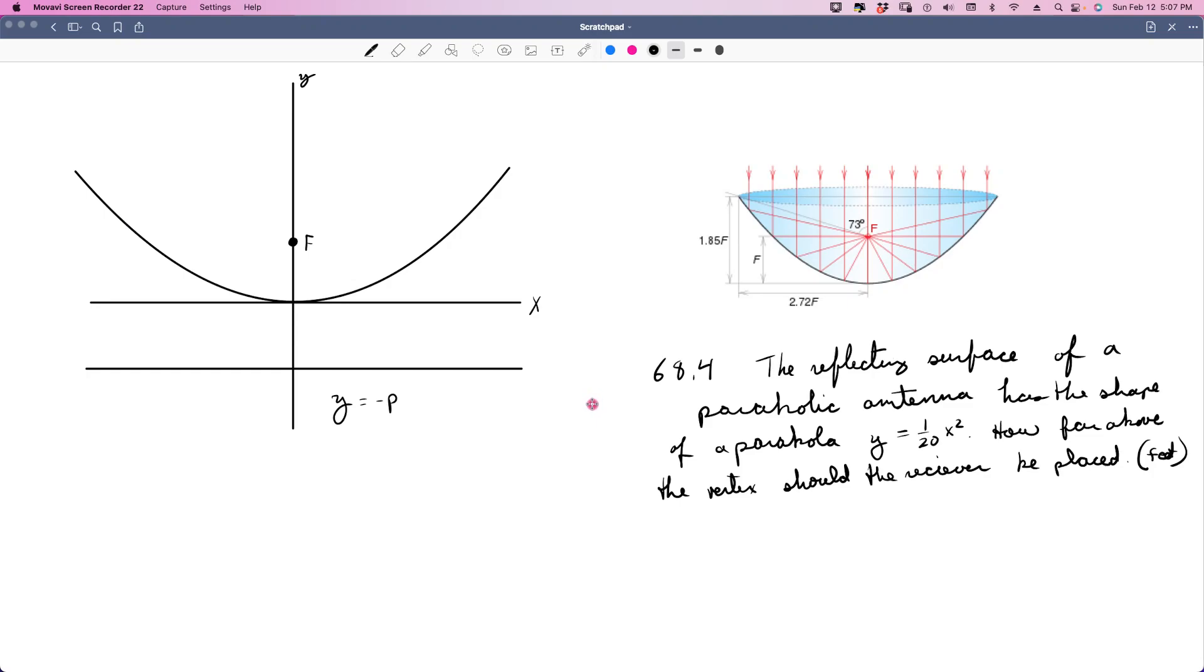The locus form of an equation of a parabola whose vertex is at the origin, whose axis is vertical, is shown right here. If P is positive, the focus is above the x-axis, and the directrix is the same distance. So the same distance from the focus to the vertex and the same distance from the vertex to the directrix. So this dimension here is going to be congruent to this dimension here.